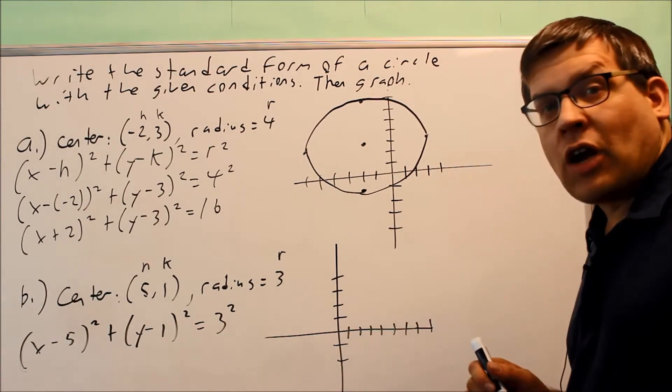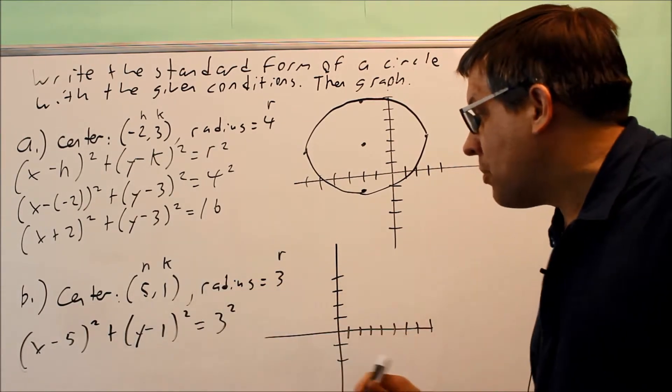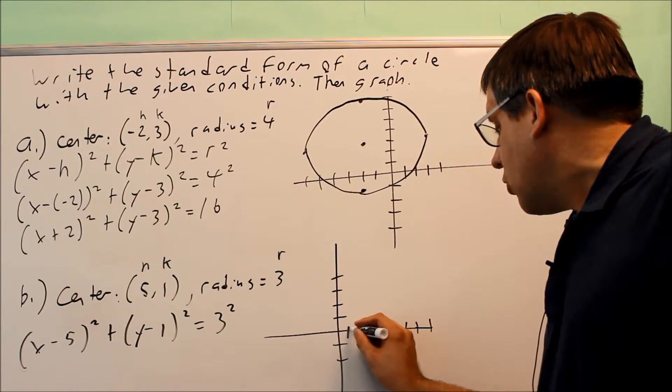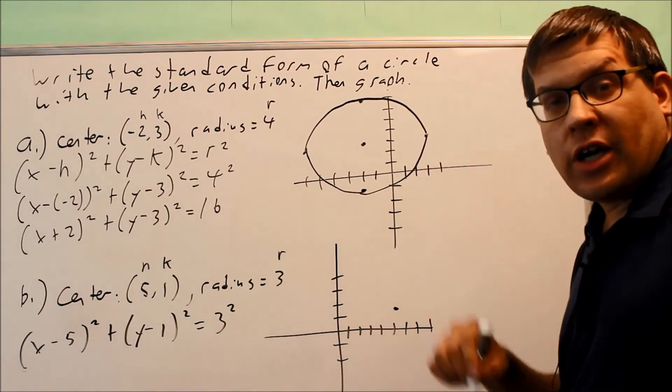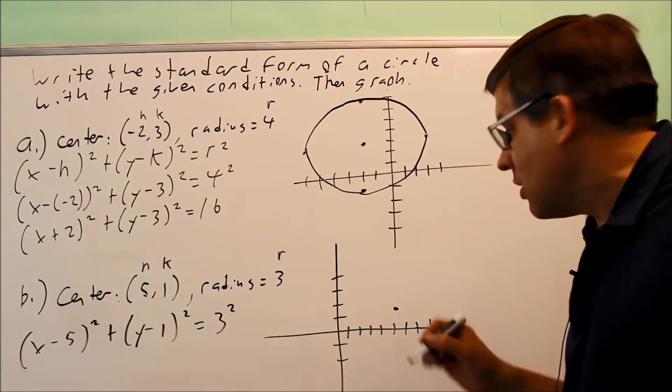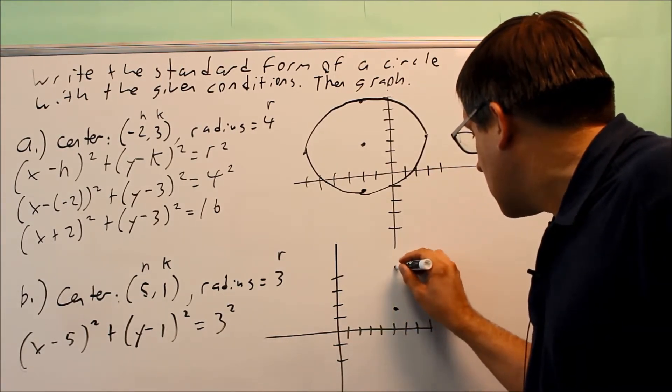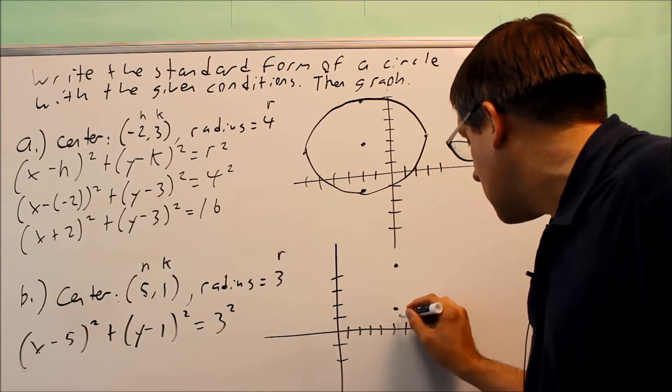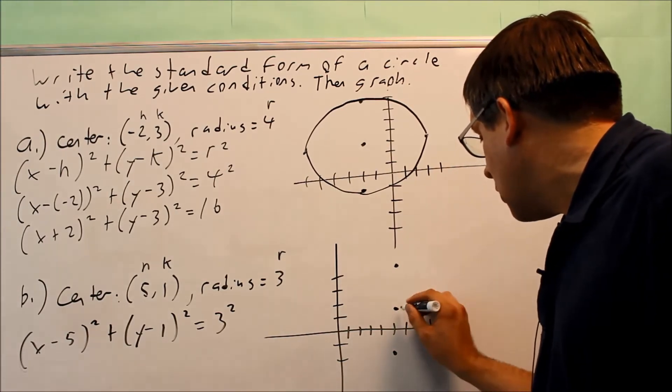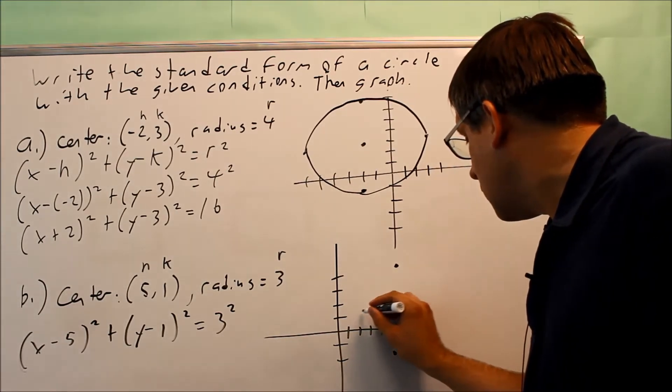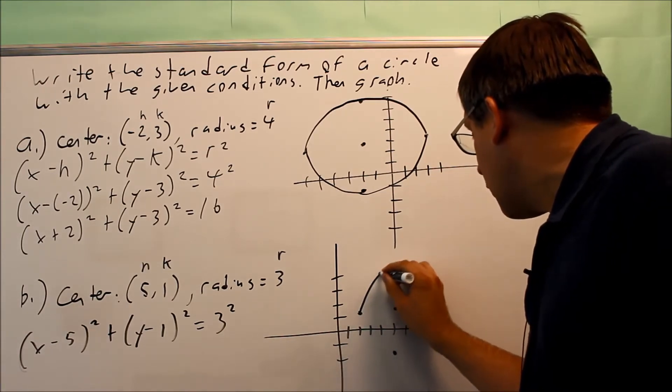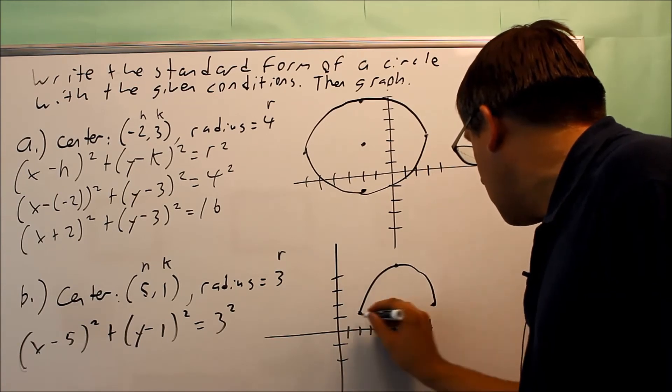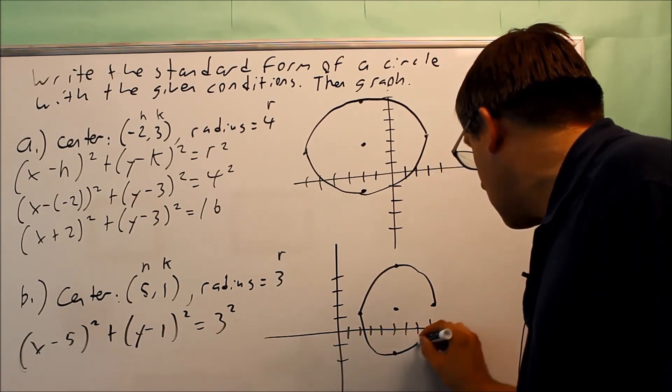So now let's take a look at the graph of this one. Again, we're going to start by plotting the center. We go 1, 2, 3, 4, 5, up 1. And then the radius is 3, so we're going to go up, down, left, and right 3. So go up 3 units, make a dot, down 3 units, make a dot, go to the left 3, to the right 3. And then now we have our 4 points that we're going to connect here. We're going to make our circle.